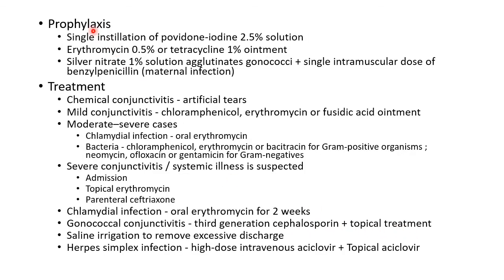For management of neonatal conjunctivitis, prophylaxis includes single installation of povidone iodine 2.5% solution, or erythromycin 0.5% or tetracycline 1% ointment. Silver nitrate 1% solution agglutinates gonococci and can be used as prophylaxis for gonococcal conjunctivitis, combined with a single intramuscular dose of benzylpenicillin when there is evidence of maternal infection.